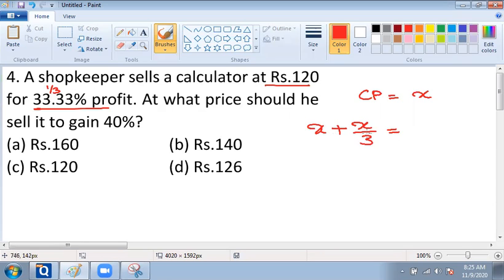So the total selling price corresponds to X plus X by 3 and that value is equal to 120 when we are considering the selling price as 120 where he makes 33.33% profit.